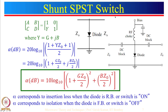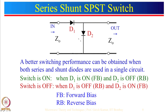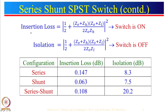After that we discussed the shunt SPST switch where the diode is mounted in shunt configuration. We found ABCD parameters, insertion loss, and isolation, and saw the biasing circuit. Then we talked about the series-shunt switch, analyzed using cascaded ABCD parameters. Multiplying the series and shunt ABCD parameters and simplifying gives the insertion loss and isolation. For the series-shunt combination, insertion loss is of the order of 0.1 dB whereas isolation is of the order of 20 dB.